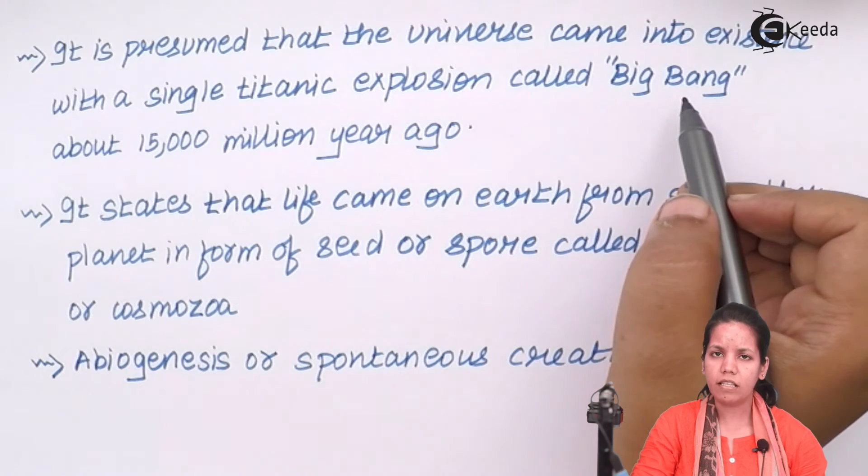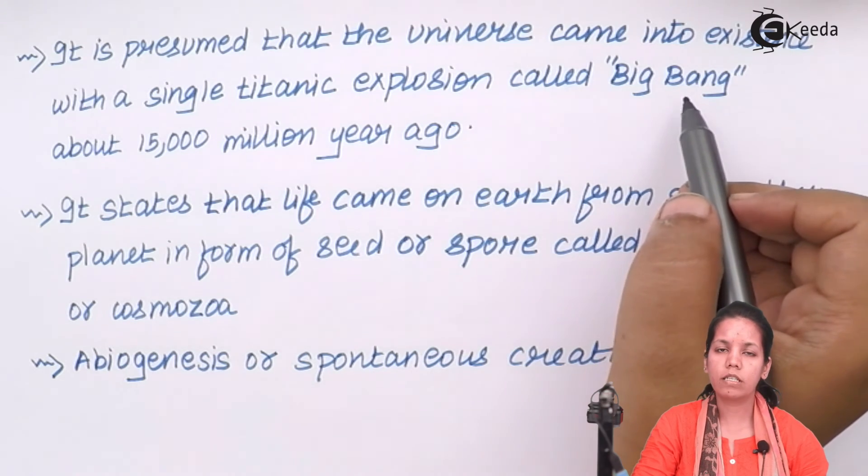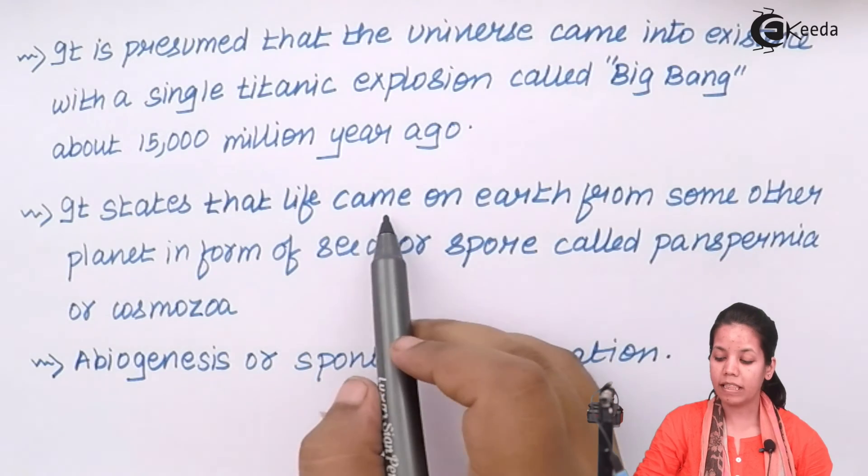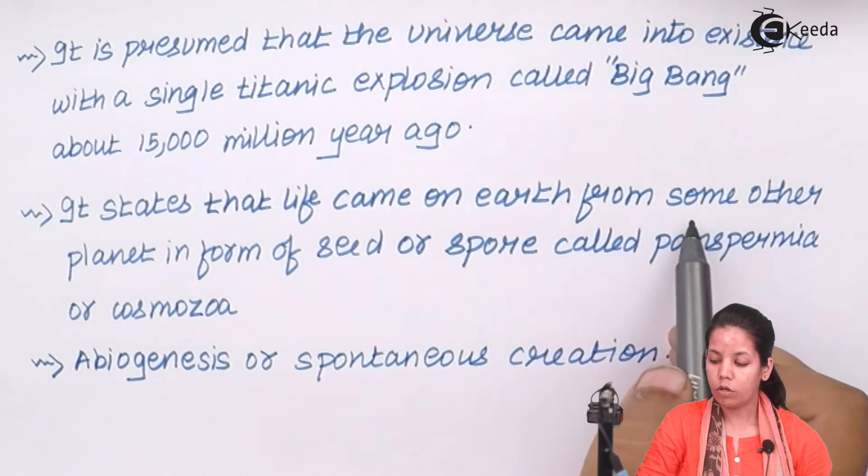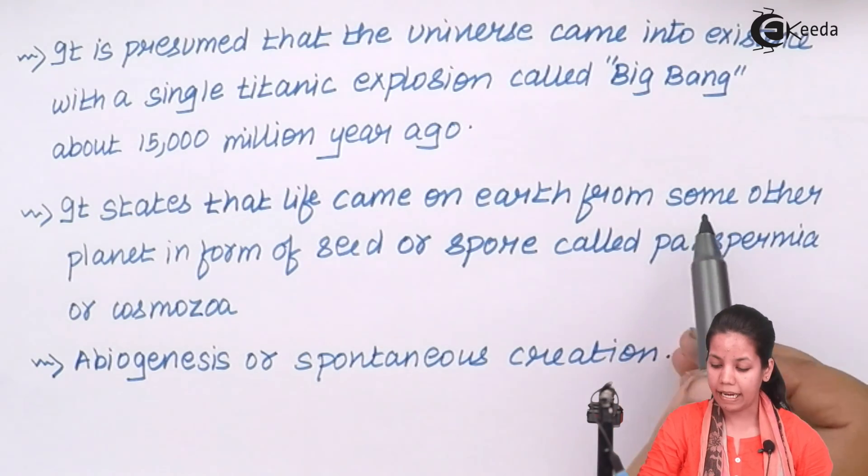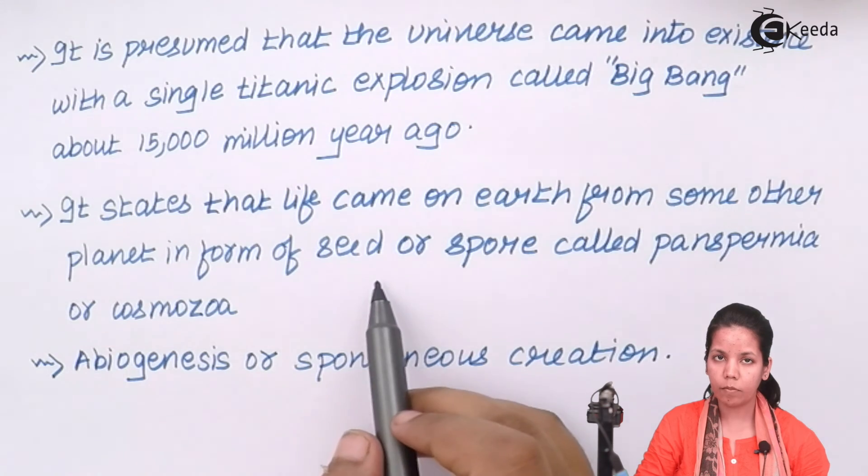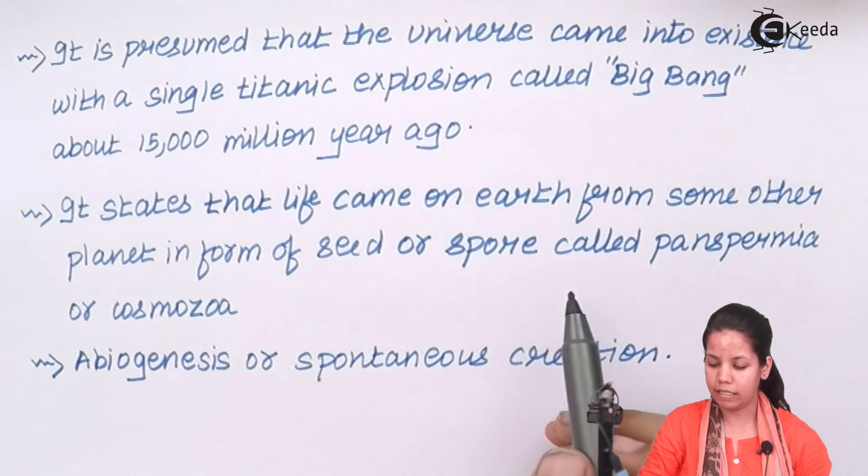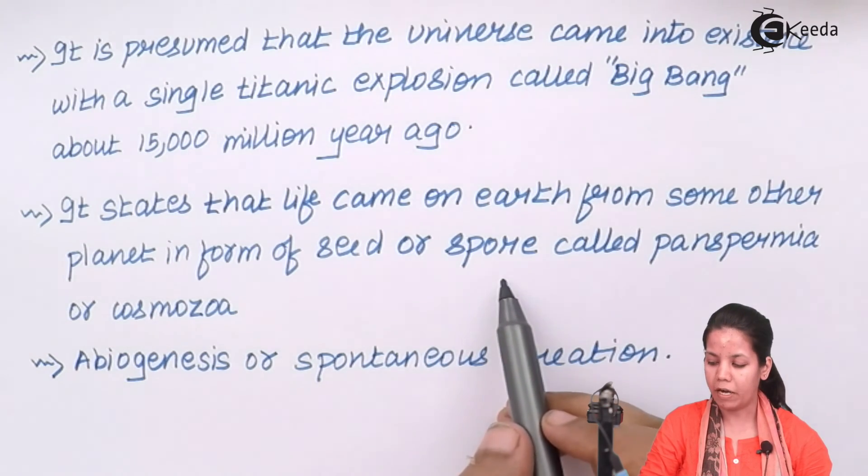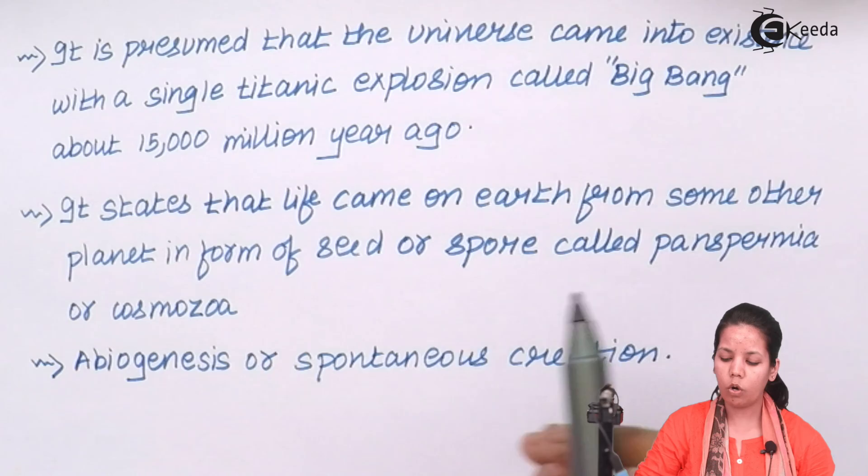But there are other scientists which also laid down certain theories as well as certain experiments that state that life on earth was from some other planet, and it is in the form of seeds or small germinating particles which are termed as spores, called panspermia or cosmozoa.